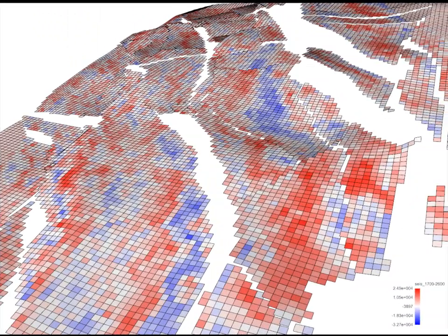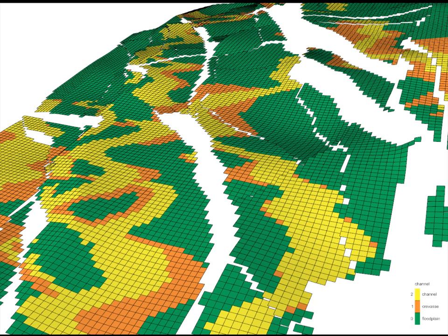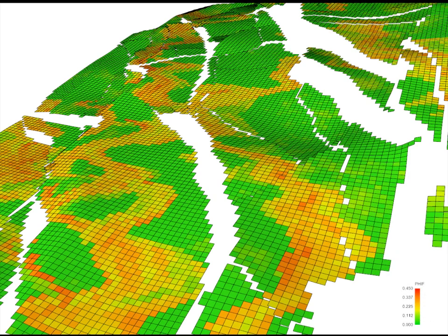Seismic attributes can be draped or resampled to any of your 3D grids and used in various ways to guide the distributions of your facies and petrophysical properties in RMS.